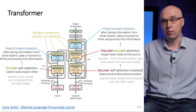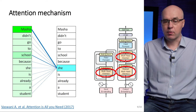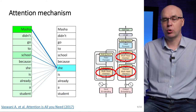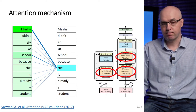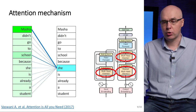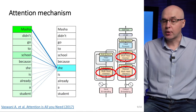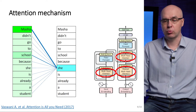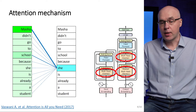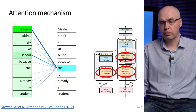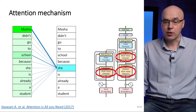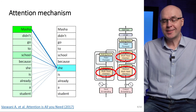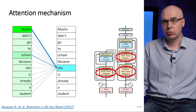The paper that proposed the transformer architecture is called 'Attention Is All You Need.' Attention is the main mechanism underlying modern language models. Attention is an approach in which, for each input word, the degree of its significance for all other words is determined. The slide shows an example: 'Masha didn't go to school because she is already a student.' The model solves the ambiguity of which word 'she' refers to — Masha or school — by assigning a greater degree of significance to the word 'Masha.' The attention mechanism is implemented in both encoder and decoder.